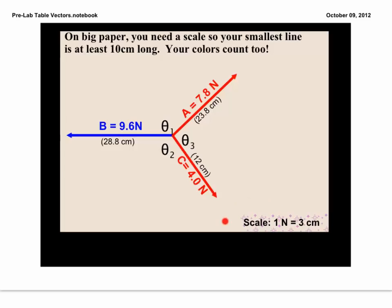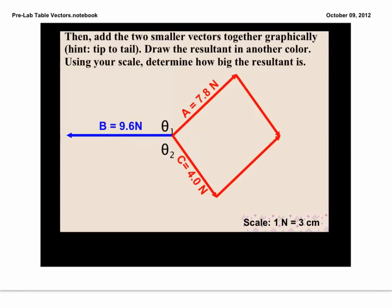Once you've also found your scale, please make sure that does get written on your page. Then, once you've drawn all your vectors in, you're going to use the parallelogram method to take your two smaller vectors and redraw them, each with the same magnitude and direction again, but tip to tail, so that we can find the resultant of our two smaller vectors.